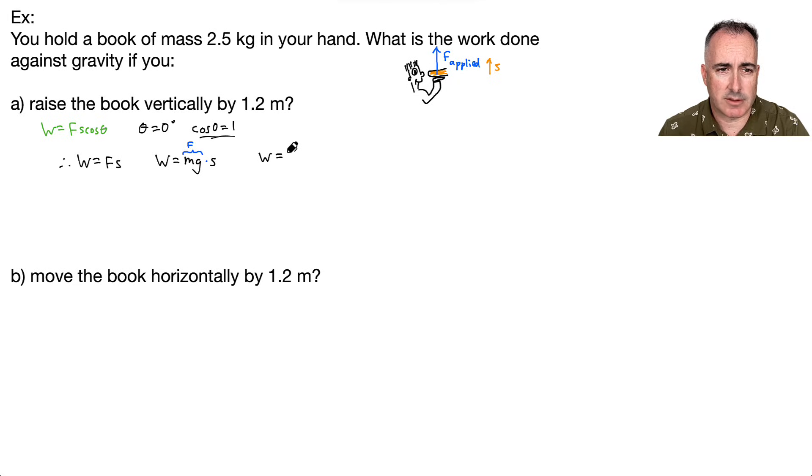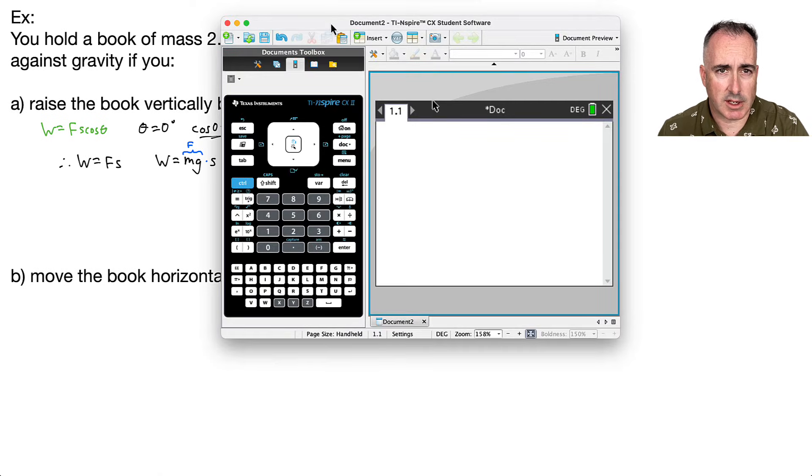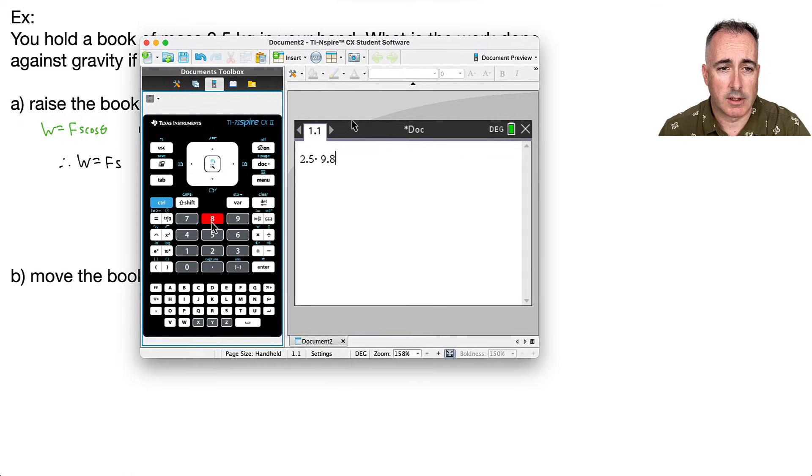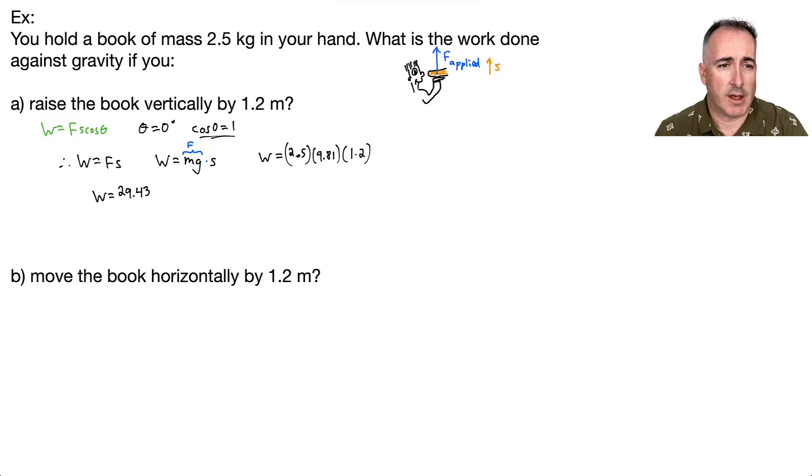Let's put in all the numbers. W equals 2.5 times 9.81 times 1.2. That gives us 29.43, but I'm only allowed two significant figures, so work is 29 joules.